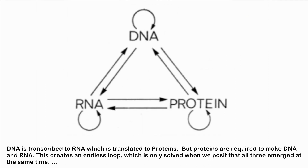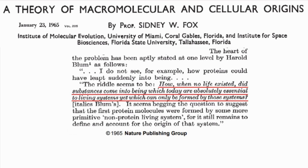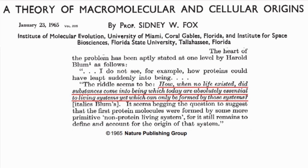By saying that all three are essential, the authors confirm that the three are not reducible — without any of them, life could not exist. That is the very concept of irreducible complexity. DNA is transcribed to RNA, which is translated to proteins, but proteins are required to make DNA and RNA. This creates an endless loop which is only solved when we posit that all three emerged at the same time. This problem was recognized already back in 1965: how did substances come into being which today are absolutely essential to living systems yet which can only be formed by those systems?